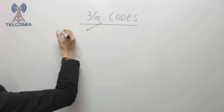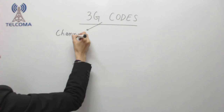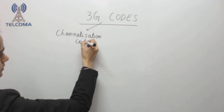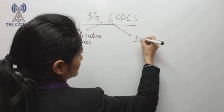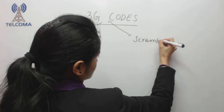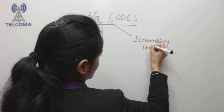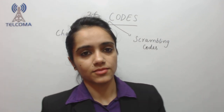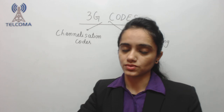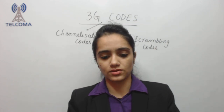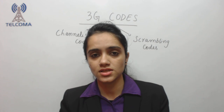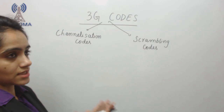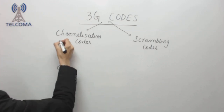In 3G we are using channelization codes and scrambling codes. In our last class we discussed spreading in CDMA where we use PN codes and Walsh codes. We can't use the same codes as in CDMA technology, so here we are using channelization codes and scrambling codes.